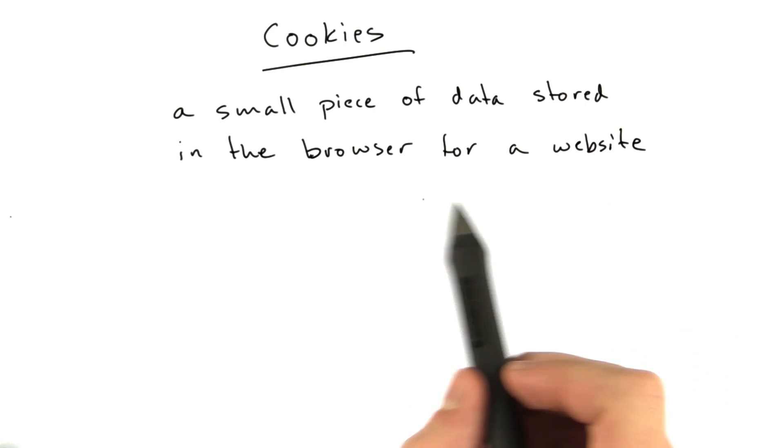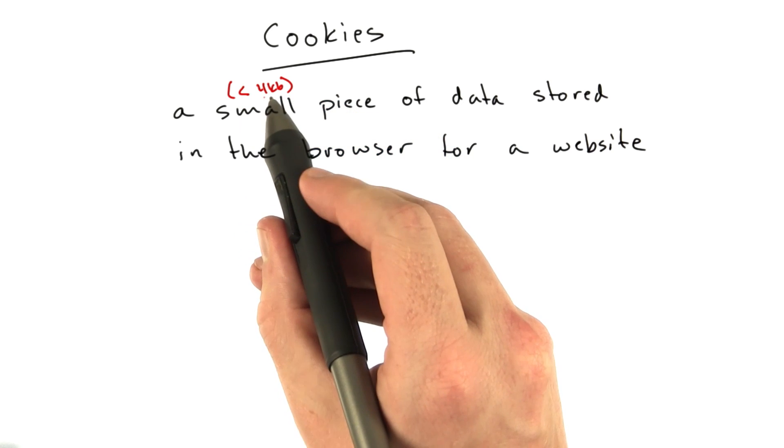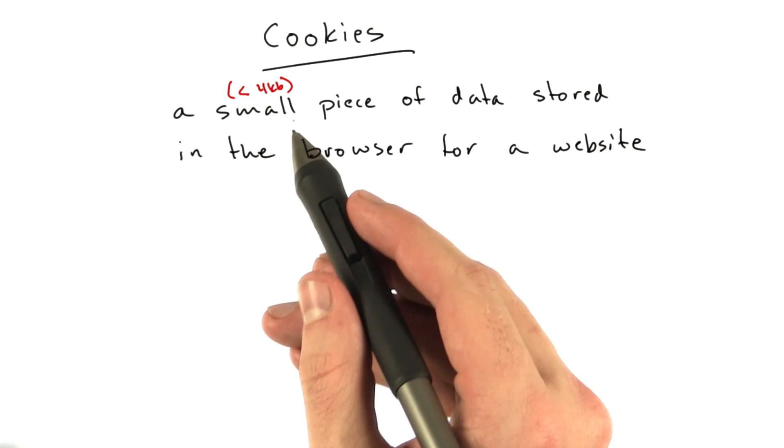A cookie is a small piece of data stored in the browser for a website. And by small, I mean less than 4 kilobytes. And in practice, we're only talking about 100 bytes. Just a small, really just a string.